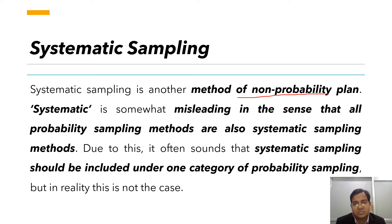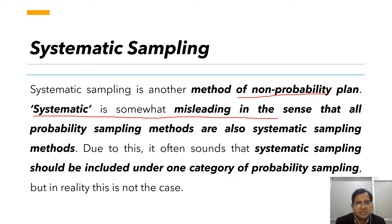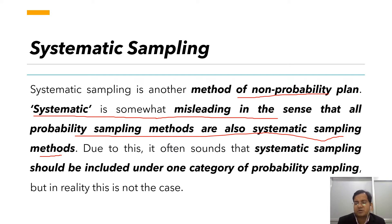There is some confusion about why systematic sampling is considered a non-probability method, because the word 'systematic' implies organized selection. In fact, all probability sampling methods — simple random sampling, proportionate sampling, cluster sampling — are also systematic in manner. Yet, systematic sampling is still considered a non-probability method.